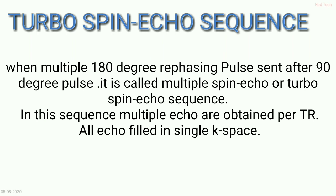The turbo spin echo, short form TSE, is also called multiple spin echo sequence. When we apply the 90-degree RF pulse and then switch it off, we apply multiple 180-degree refocusing pulses. This is the turbo spin echo sequence — multiple echoes are acquired from the hydrogen protons of the patient.